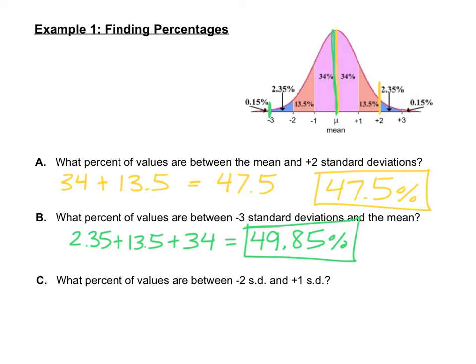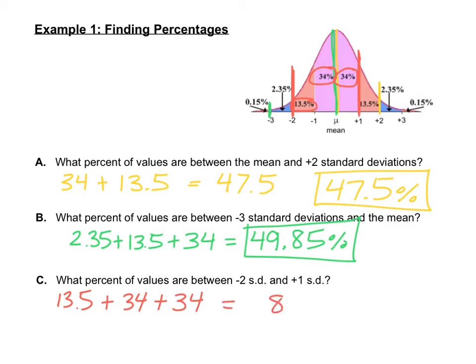For the last example, what percent of data values are between negative two standard deviations and positive one standard deviation? Looking at the sections between negative two and positive one, we add the three values: 13.5%, 34%, and 34%. That totals 81.5% — so 81.5% of all data values fall between two standard deviations below the mean and one standard deviation above the mean.